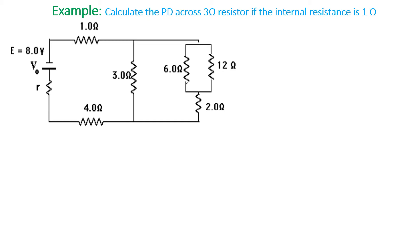Welcome to this lesson. The topic is electricity, and this is another example following the previous lessons where we did calculations involving cells and parallel connections of resistors. Here we are going to do almost the same thing. The question reads: calculate the PD across the three-ohm resistor if the internal resistance is one ohm.